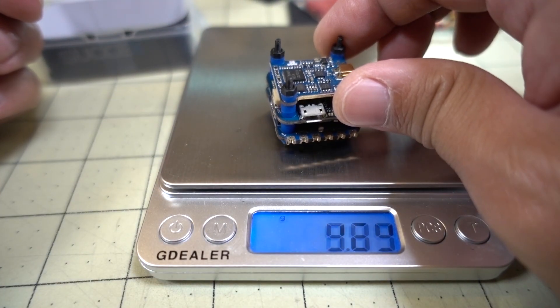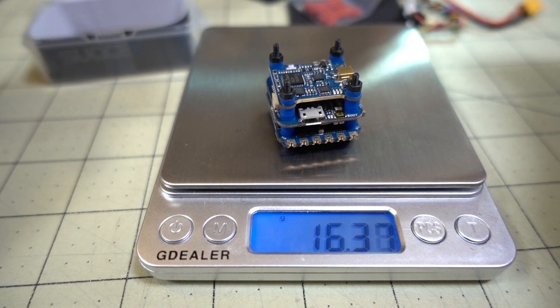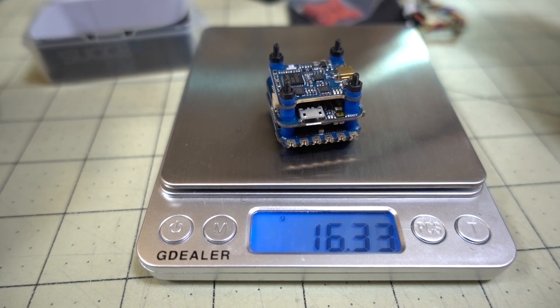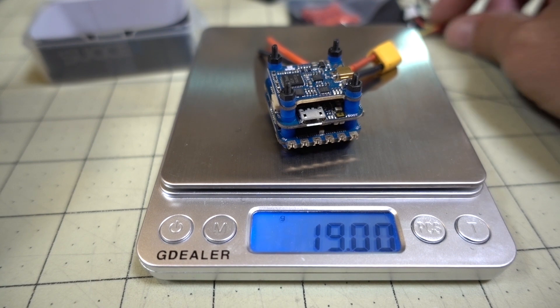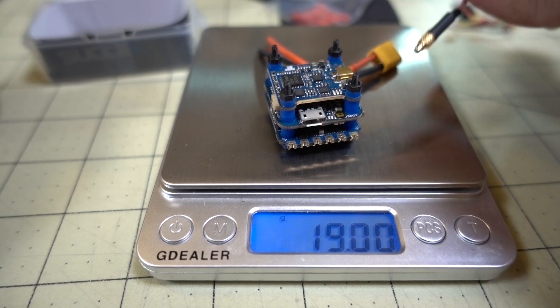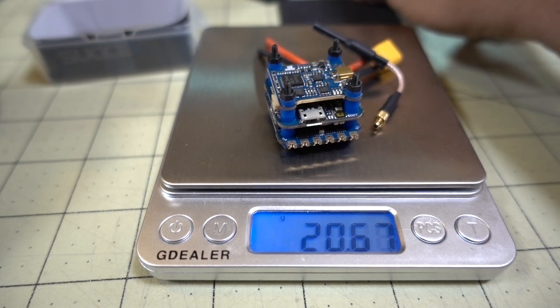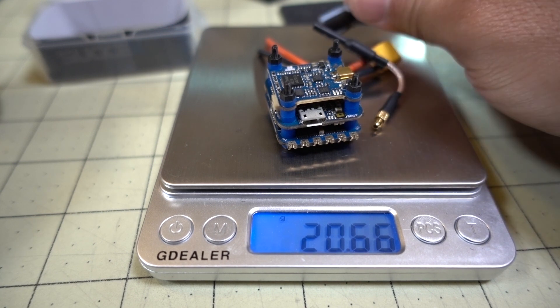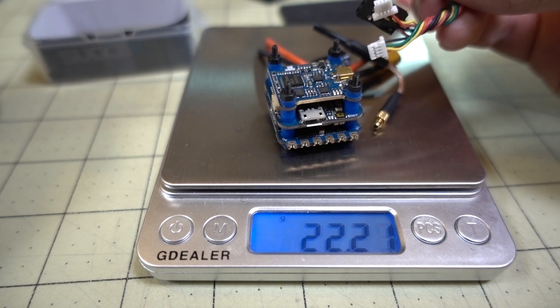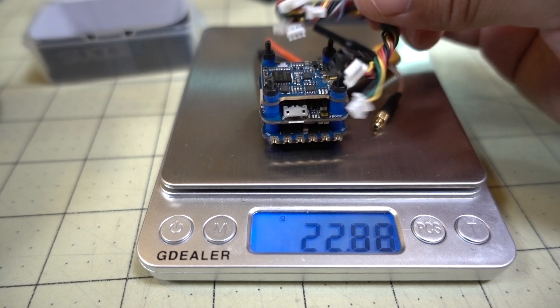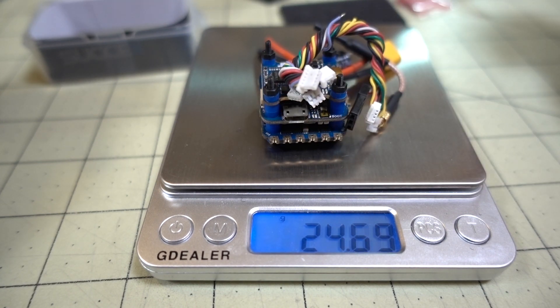Okay, so this is the weight of the stack with nothing on it. 16.3 grams. And then the XT30, it's coming in at 19 grams. Throw on the whip antenna there, 20.66. And then the capacitor, 22.2 grams. And then we'll throw on all the wiring harnesses, coming in at 24.7 grams.